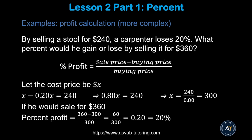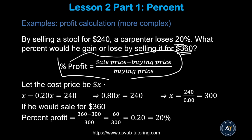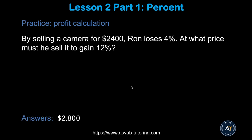Here's a slightly different problem: by selling a tool for $240, a carpenter loses 20 percent. What percent would he gain or lose by selling it for $360? First, find the original cost: if $240 represents an 80 percent value (100% − 20% loss), then the cost price is $300. Now use the profit formula: (360 − 300) / 300 × 100 = 20 percent profit.